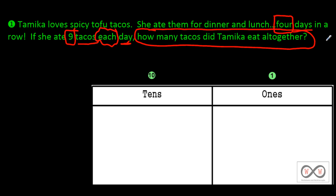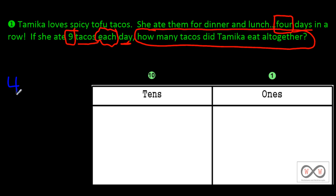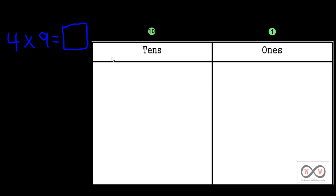Well, if you're thinking: in multiplication we have a couple of factors here. We have four representing the four days, and on each of those days she ate nine tacos. So we have two known factors and an unknown product here — four times nine equals. You may know this, but let's see what happens on a place value chart. Let's investigate what happens here.